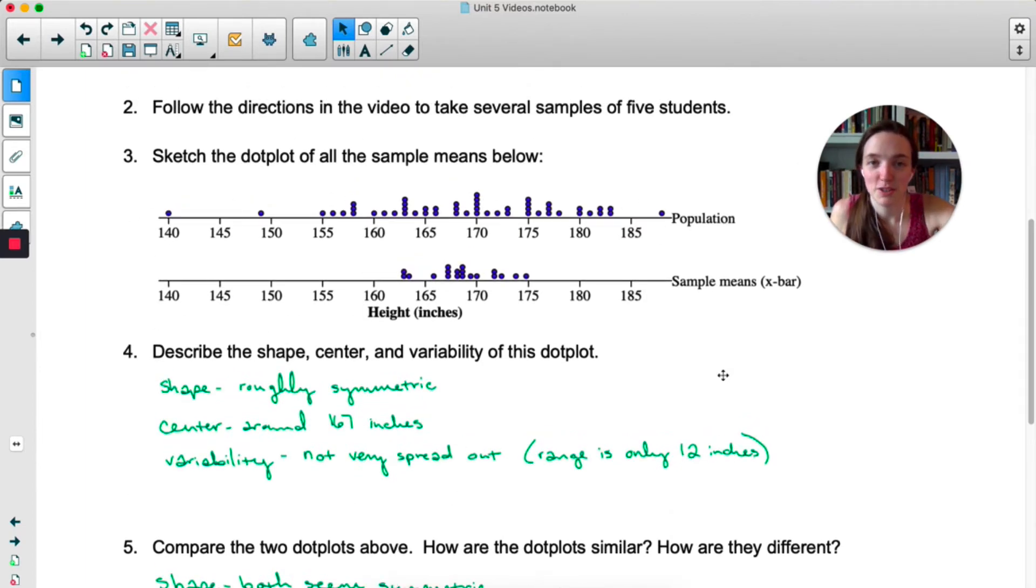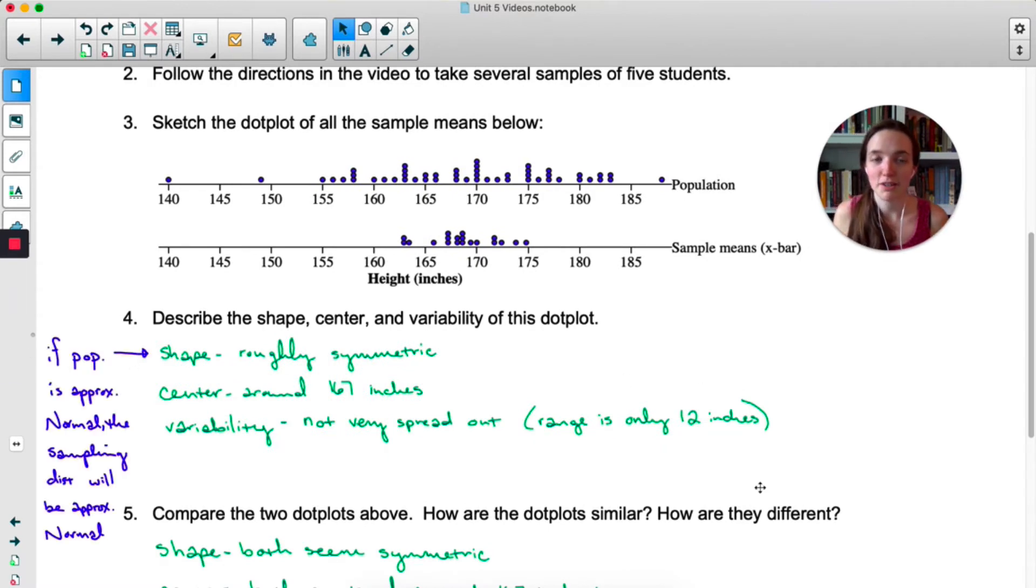Let's look at each of these one at a time. So shape. It turns out that if the population is approximately normal, then the sampling distribution will be approximately normal as well. So this is true for any sampling distribution of sample means. If the population looks approximately normal, then the sampling distribution of x-bar will also be approximately normal, which is definitely what we're seeing here.